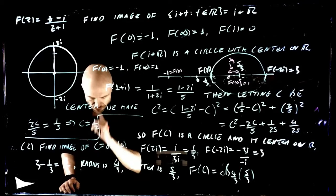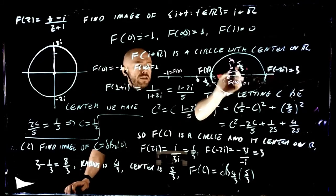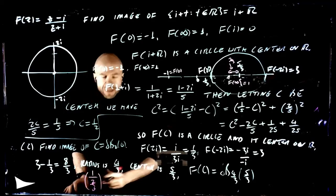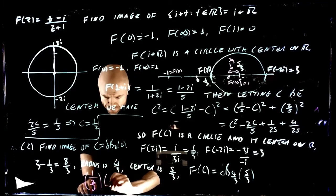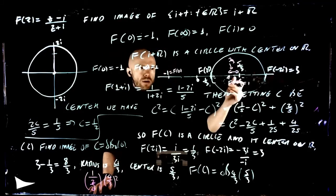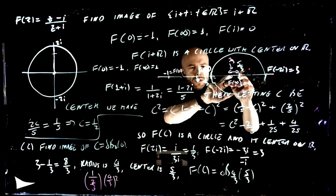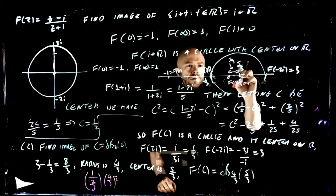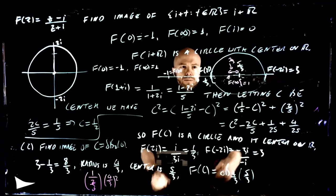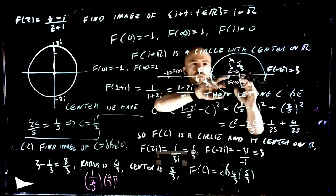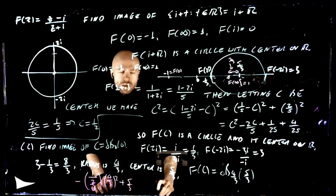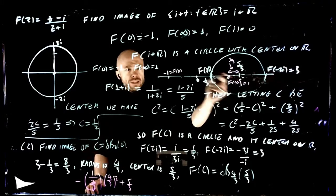So in principle, we should have that if we take this distance, so if we take 1 over 2 over 3, and then we multiply it by the radius squared, which is 4 over 3 squared, and we add it to the number 5 over 3 which is the center, but we're going in this direction so it's negative. So we take this quantity minus, plus 5 over 3.